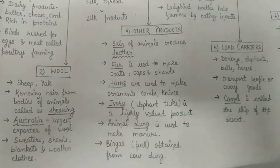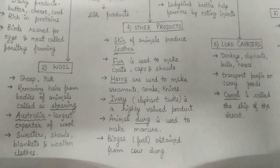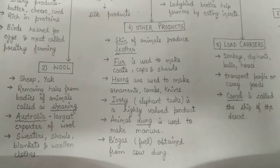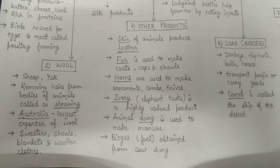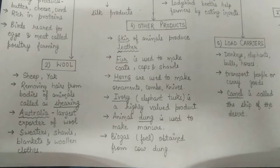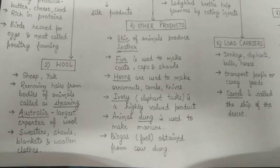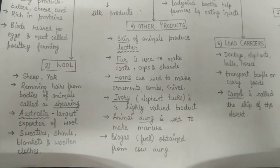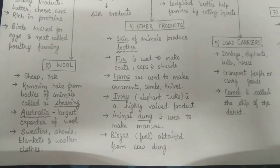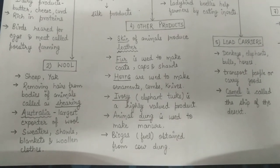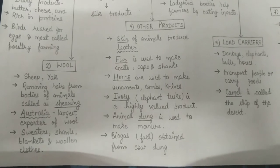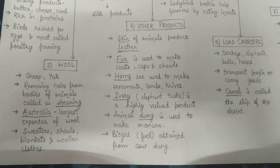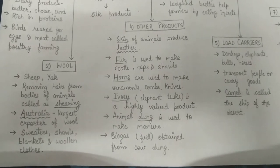If I ask you what is shearing, shearing means removing the hairs from the bodies of animals like sheep and yak. Now, you might wonder: after removing the hairs, can the hairs come back on their bodies? The answer is yes — after removing their hairs, the sheep and the yak get their hairs back.